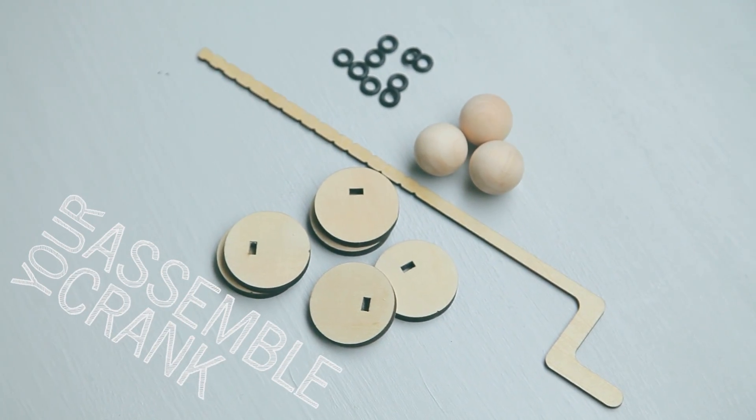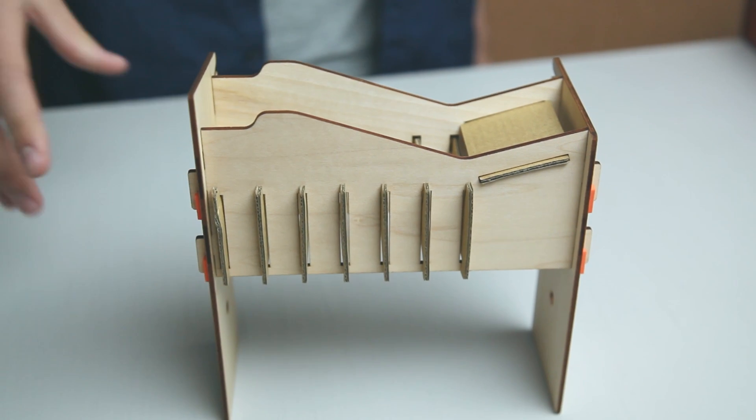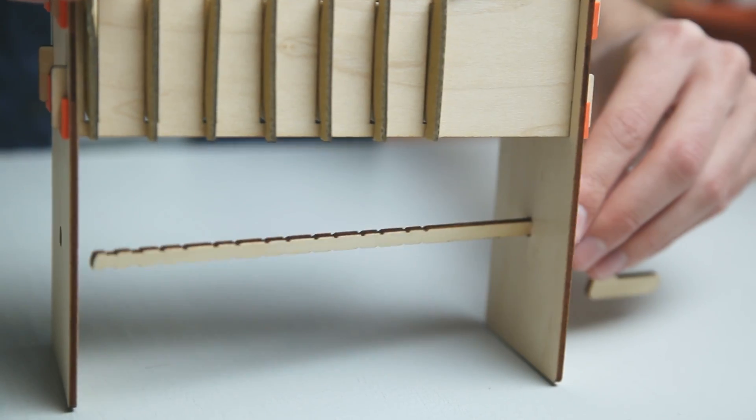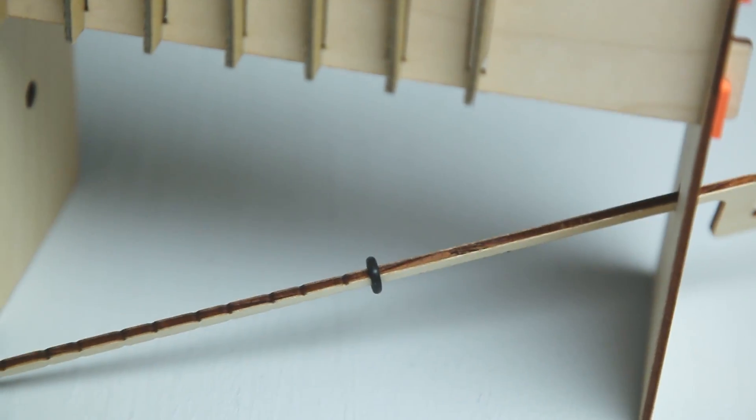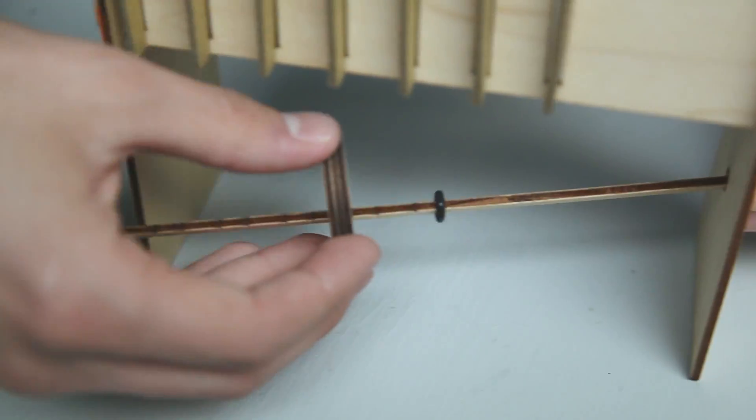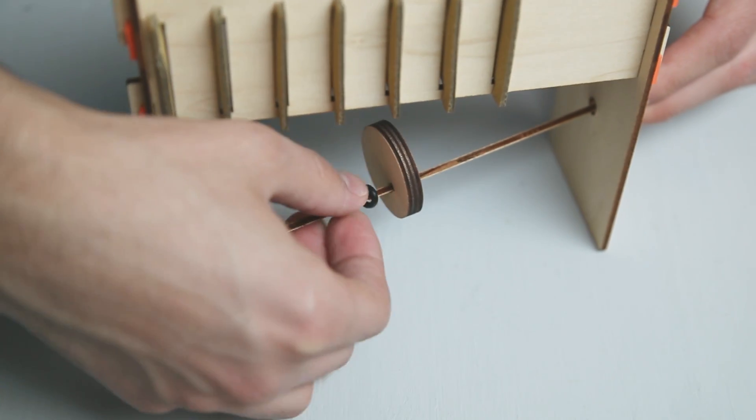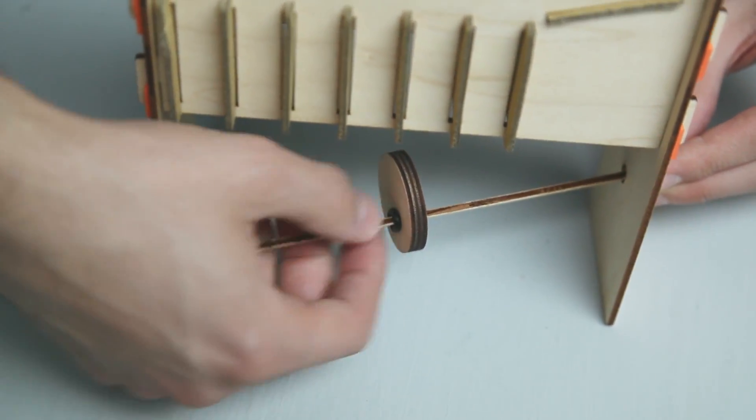Orient your frame so that the shorter side is on the right and slide your crank into the hole. Grab an O-ring and slide it all the way down the crank to the last notch. Slide your first cam all the way down your crank to the first O-ring and sandwich it between another O-ring.